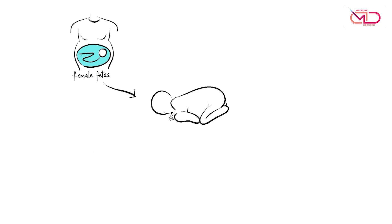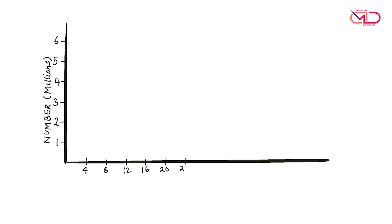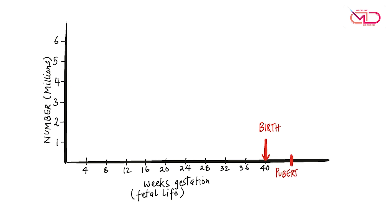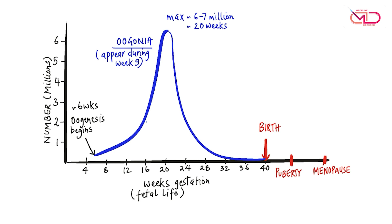A female is born with a finite number of oocytes or follicles within her ovaries. To get a perspective, let's look at a timescale of events: on the y-axis, the number in millions; on the x-axis, weeks of gestation during fetal life, then birth, childhood, puberty, reproductive lifespan, and finally menopause. Oogenesis begins at around six weeks of gestation, and oogonia appear first at around nine weeks, reaching a maximum of around six to seven million at around 20 weeks of gestation, thereafter rapidly declining.